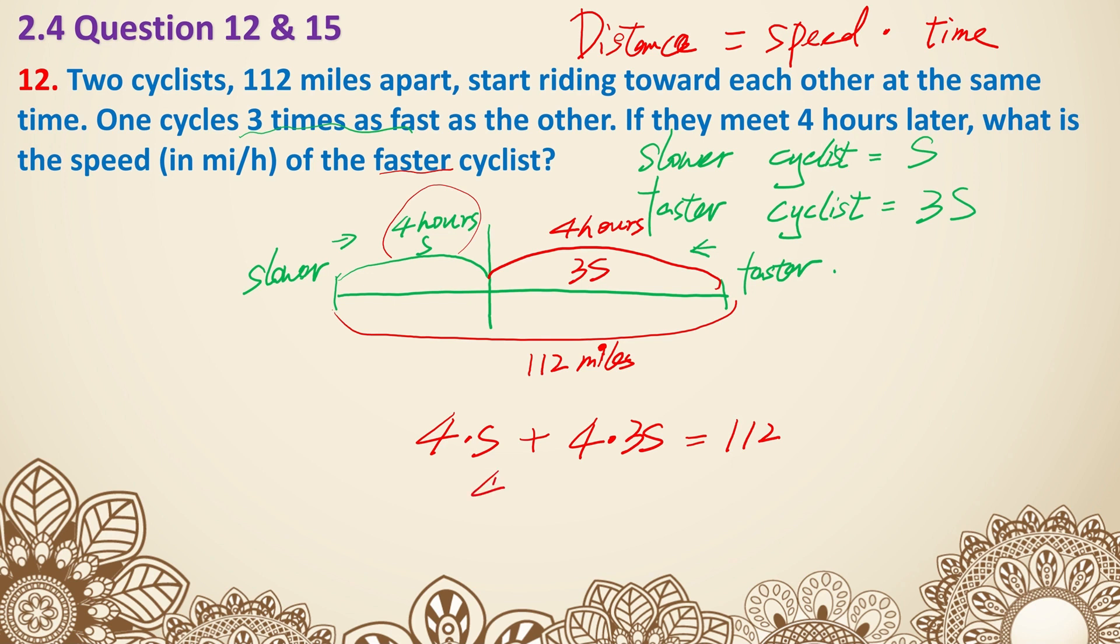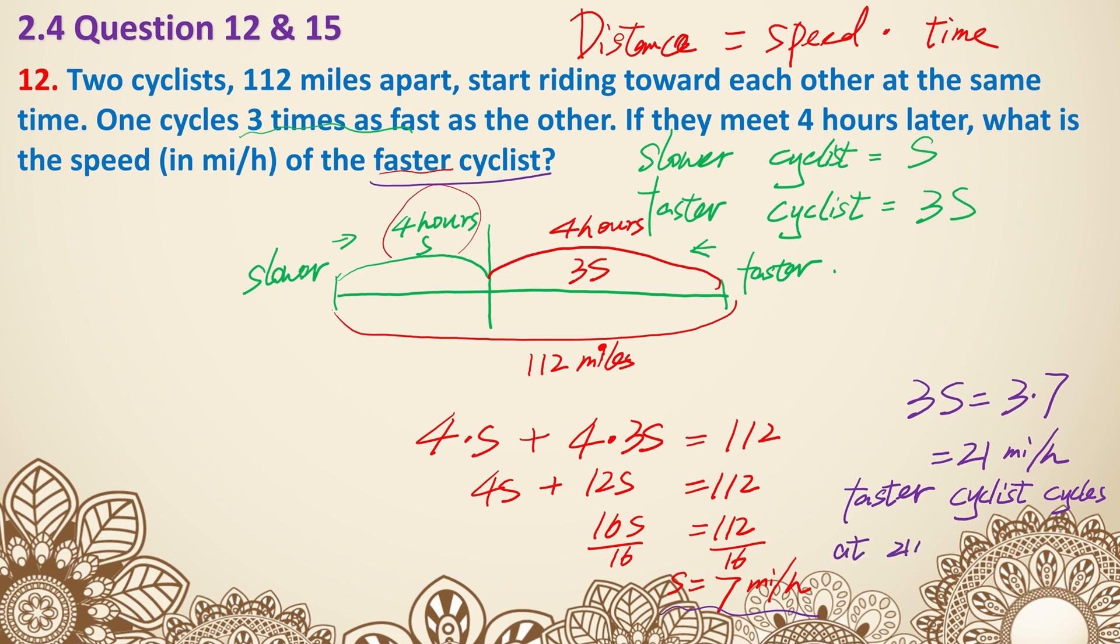So now it's 4s plus 12s, that equals 112. So 16s equals 112. Divided by 16, s equals seven, and it's seven miles per hour. But hold on, the question is asking for the faster cyclist. So even though we found s, we're not fully done because this is the slower one. For the faster one, 3s would be three times seven, which is 21 miles per hour. So the faster cyclist cycles at 21 miles per hour.